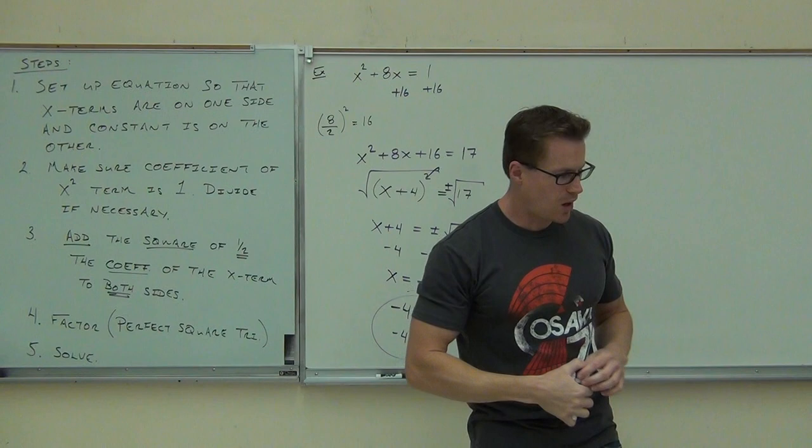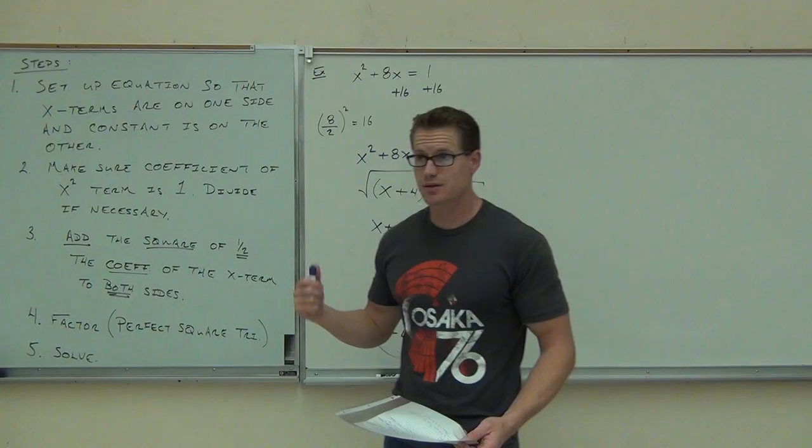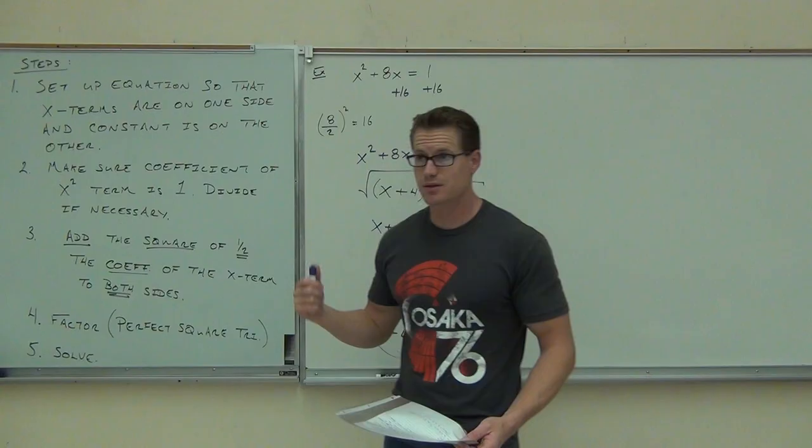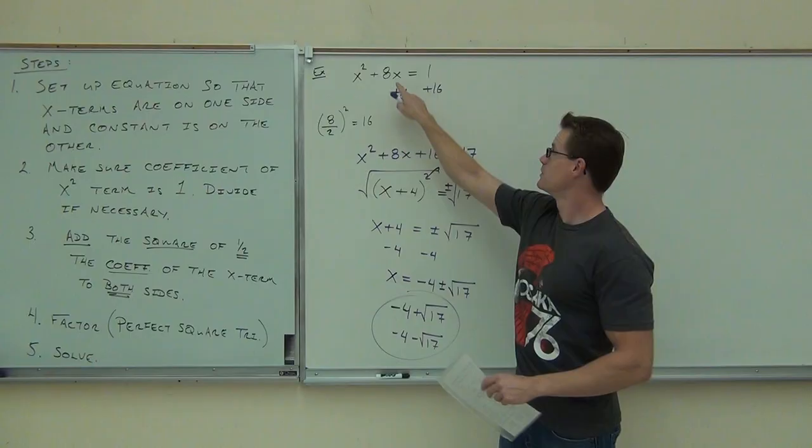We have two solutions: negative 4 plus root 17 and negative 4 minus root 17. Raise your hand if you feel okay with that. We'll do a whole bunch more examples next time. Right now this was nice because the leading coefficient was 1 and the middle coefficient was even. If that number's odd, when you divide by 2, you get a fraction — and that's something we'll address.